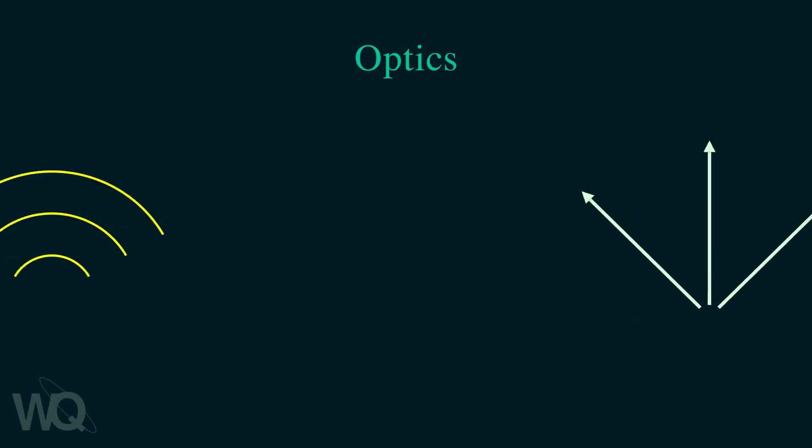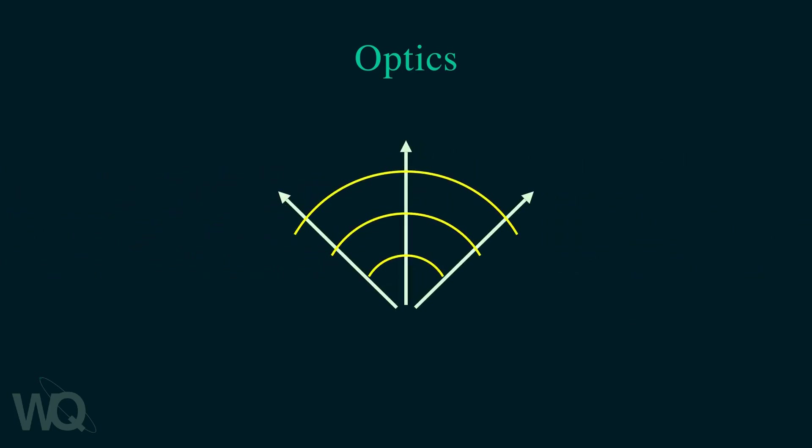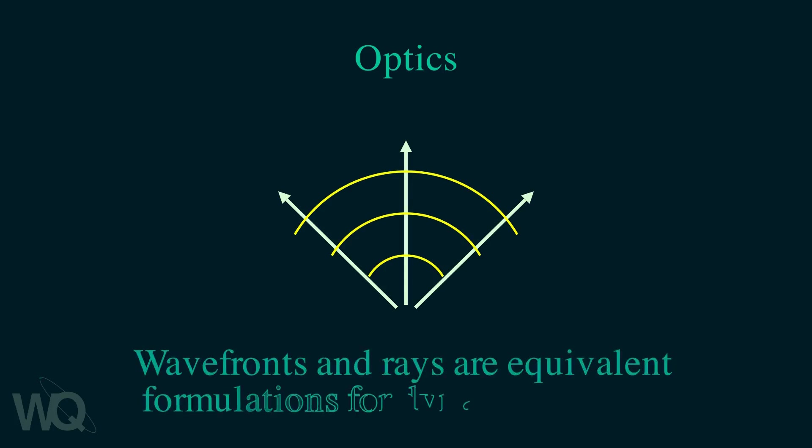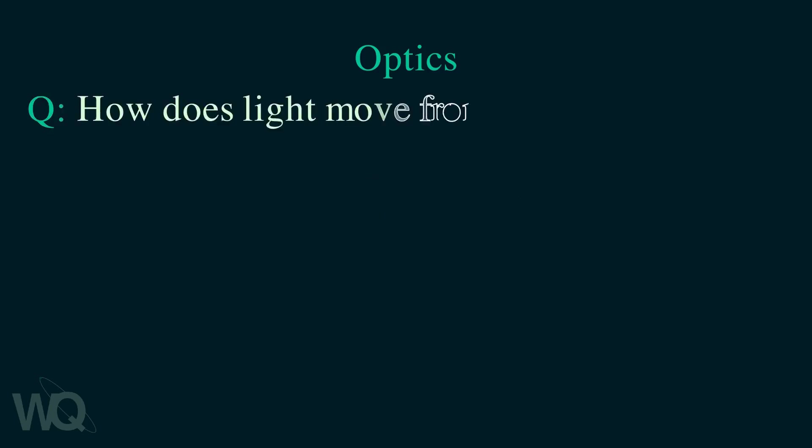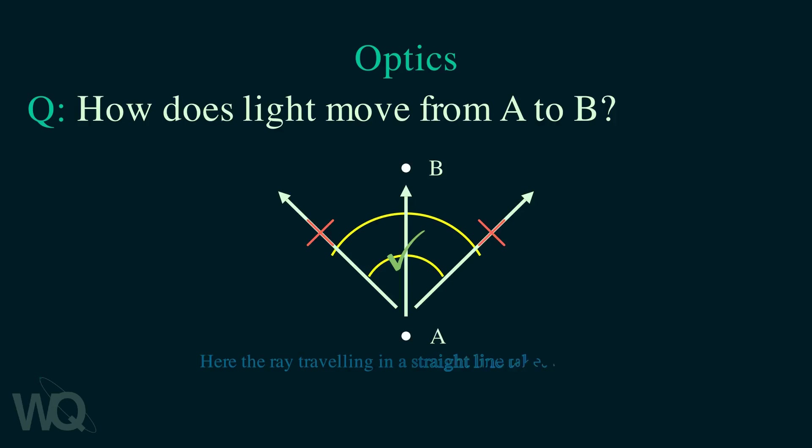The wave fronts and rays are related. They are always perpendicular to each other. So if you know how light propagates as waves, you can also find how the light propagates as rays. Simply draw the rays such that they are perpendicular to the wave fronts. Since there are multiple ways of drawing perpendicular rays, the ray of light is the one that travels between two points in the least amount of time. This is called the principle of least time.